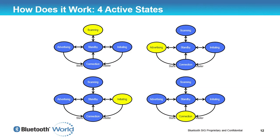The link layer has a very simple state machine with four main states plus a standby state in the middle. The states are: scanning, advertising, initiating, and connected. If you're advertising and another device is initiating and sends a connect request, both devices move into the connected state. The only way out of the connected state is back to the standby state. It's a very simple state machine.